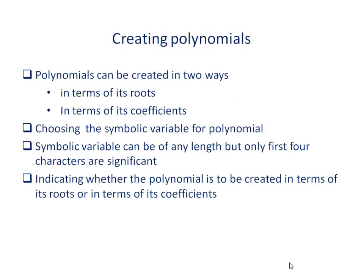First, creating polynomials. Polynomials can be created in two ways: one way is to define the polynomial in terms of its roots, and the other way is to define it in terms of its coefficients. While creating a polynomial, we must choose a name for the symbolic variable. The symbolic variable name can be of any length, but only the first four characters are significant; the other characters are ignored. We also indicate whether the polynomial is to be created in terms of roots or in terms of coefficients.